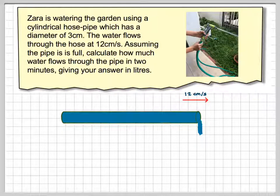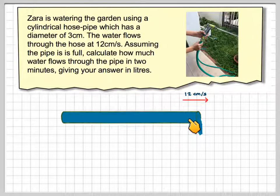Now, what you need to imagine is, every second there will be a length of 12cm along this hose of water which will flow out.